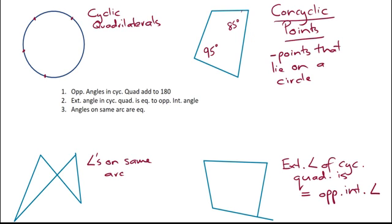Hi there. This video is going to look at something called concyclic points. Concyclic points are points that lie on a circle.